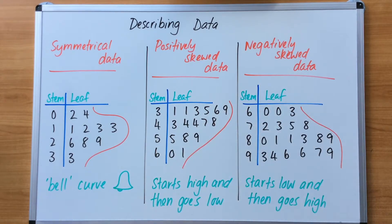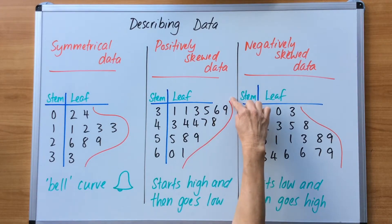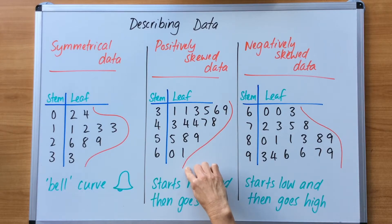Skewed data will produce a graph which includes data bunched to one side of the center. If we focus on positively skewed data, it starts off really high to begin with, and then the data drops off as it progresses. It starts high and then goes low.